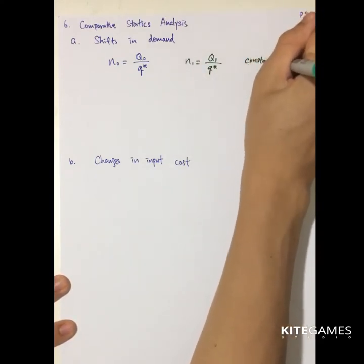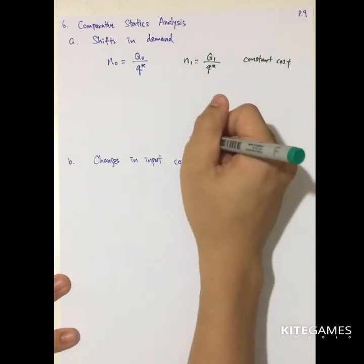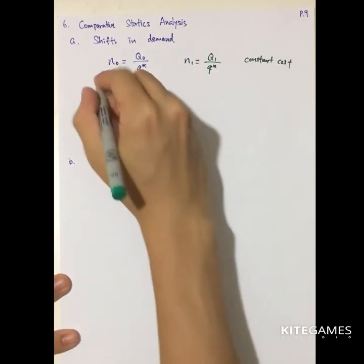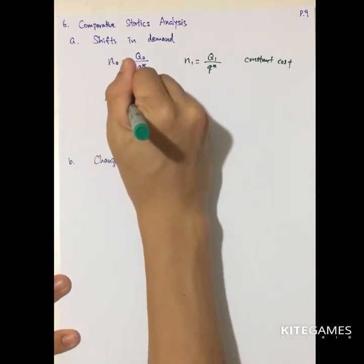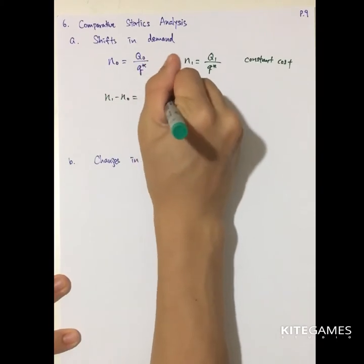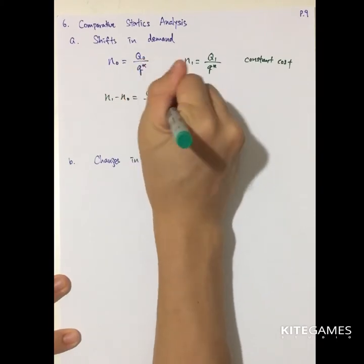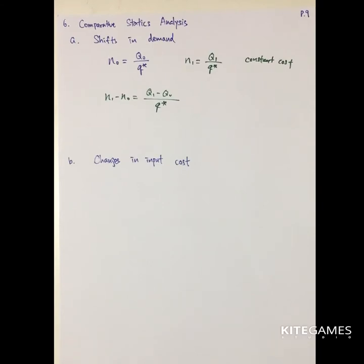In the constant cost case, Q-star is unchanged. So the increase in the number of firms equals (Q1 minus Q0) divided by Q-star. This case is straightforward under constant cost.